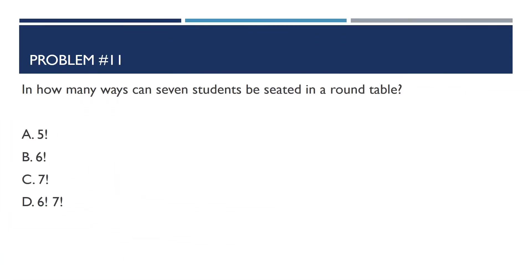Here's problem number 11: In how many ways can 7 students be seated at a round table? The answer for number 11 is 6 factorial. The formula for this is P equals (N minus 1) factorial, where P stands for the permutation. It's not the usual permutation formula, but it's actually for circular permutation — it's given that it's a round table, so it's circular.